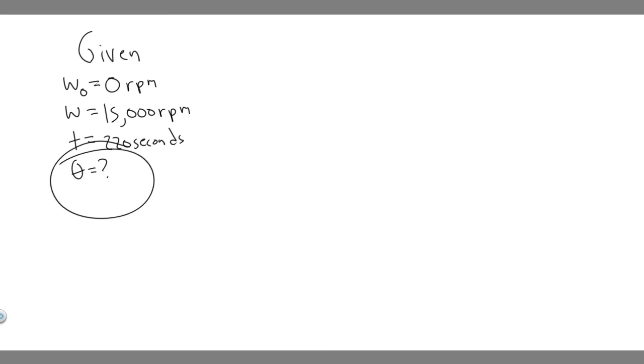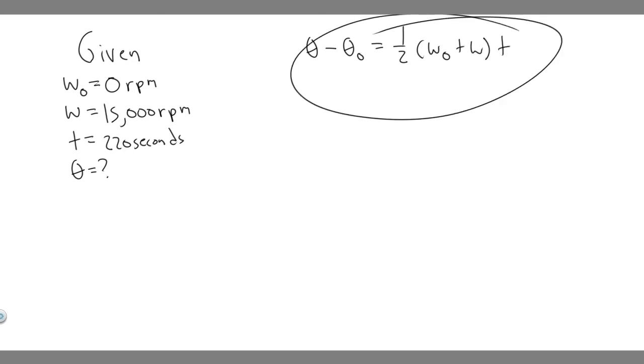In order to solve this, we're going to use the kinematic equations, but essentially they work for angular or rotating motion. They're basically just the normal kinematic equations replaced with the angular or rotational variables. So the equation we're going to use to solve this is theta minus theta sub zero equals one half times omega sub zero plus omega times t.